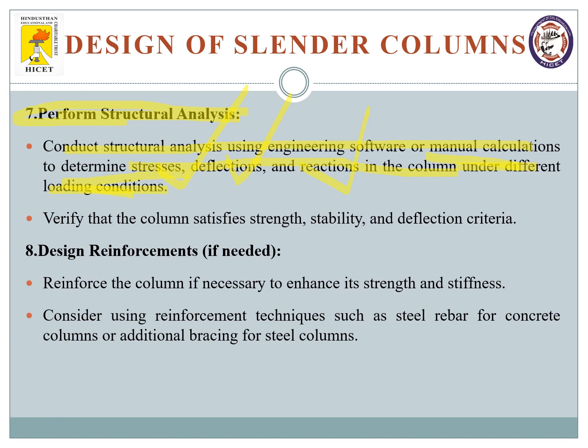IS code provisions give load combinations like 1.5 times dead load plus live load, and 1.25 times of other combinations. You have to perform analysis for all these combinations. Then verify that the column satisfies strength, stability, and deflection parameters. If all these are satisfied, you can proceed to the next part, which is the design of reinforcements.